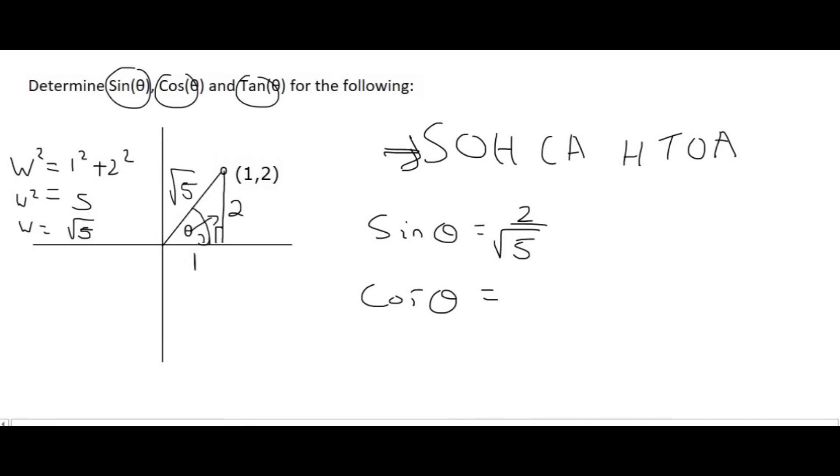The cos of theta is the adjacent. I must have erased the 1, but cos theta is going to be equal to 1 over the square root of 5, because that's the hypotenuse. And then the tan of theta, that's going to be equal to the opposite over the adjacent, which is 1.